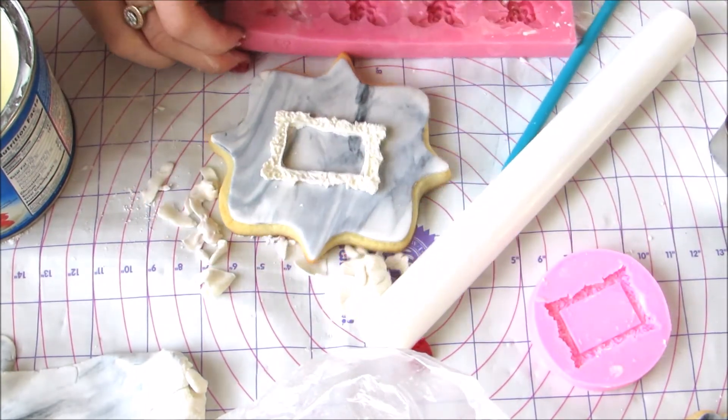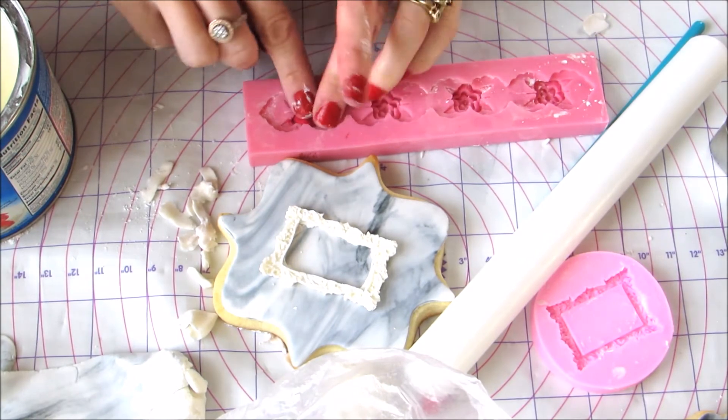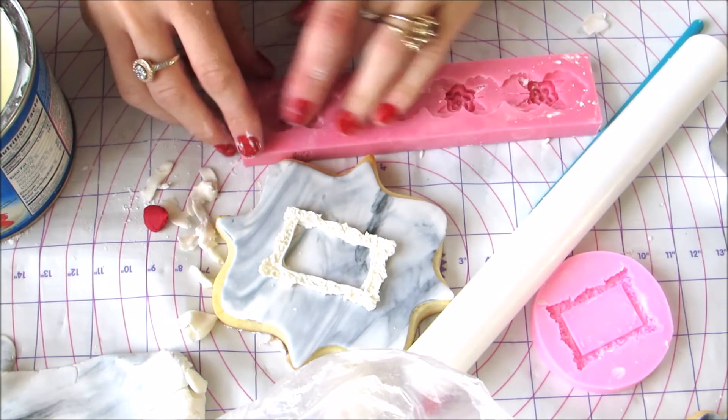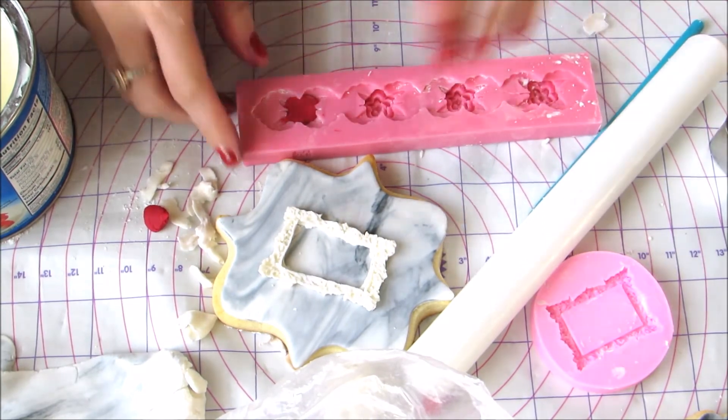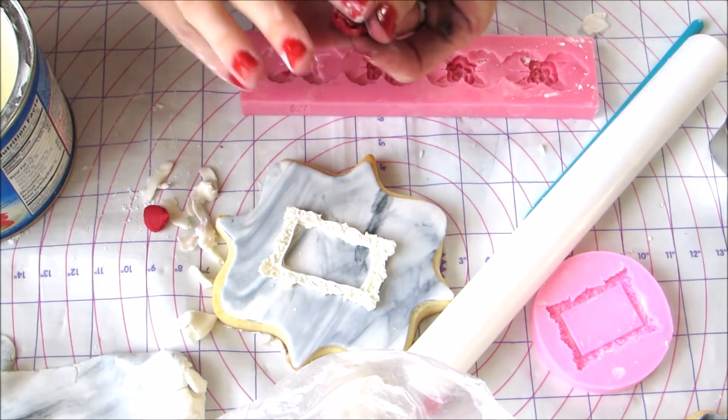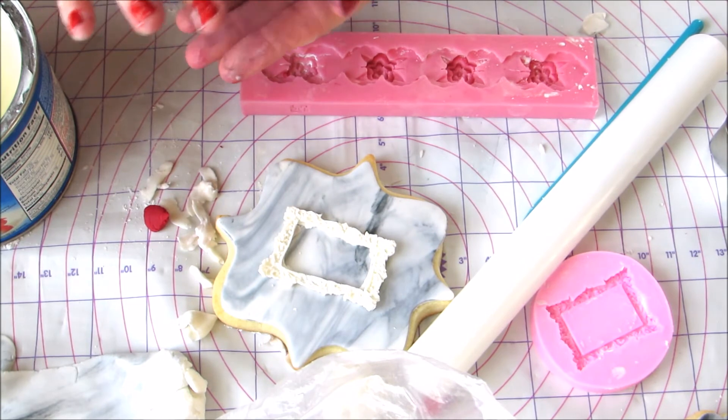The molds I'm using I will put in the info so you know where I bought them. Both people I bought these from have Instagram so you can easily look at all the types of molds they have. There's a little bit of cornstarch on my flower, so I'm just going to put some Crisco on top.